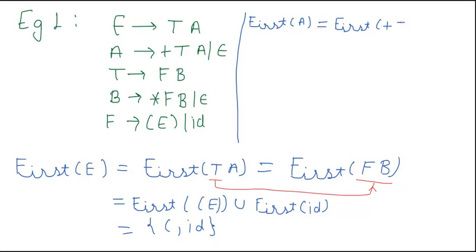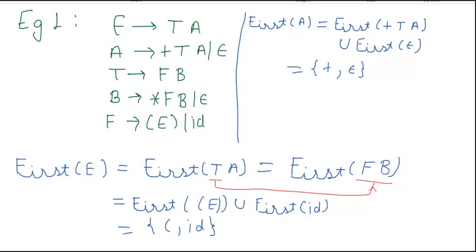First(A) is equal to First(+TA) union First(epsilon), which would be equal to {+, epsilon}. That is, we take plus and epsilon.